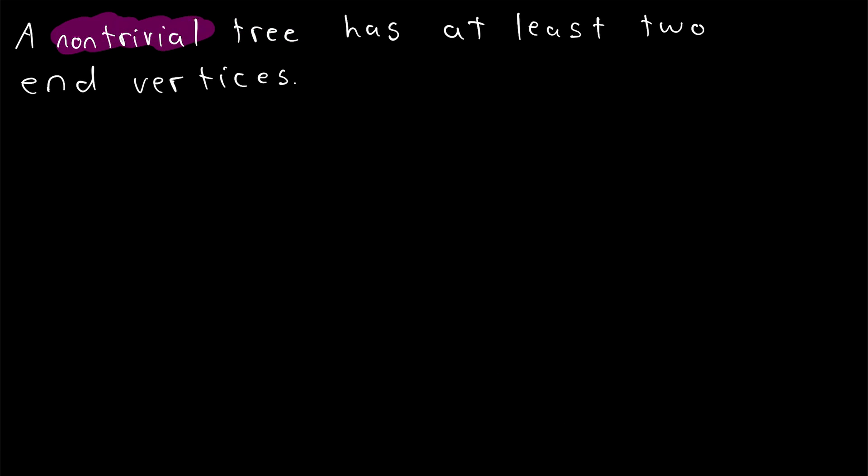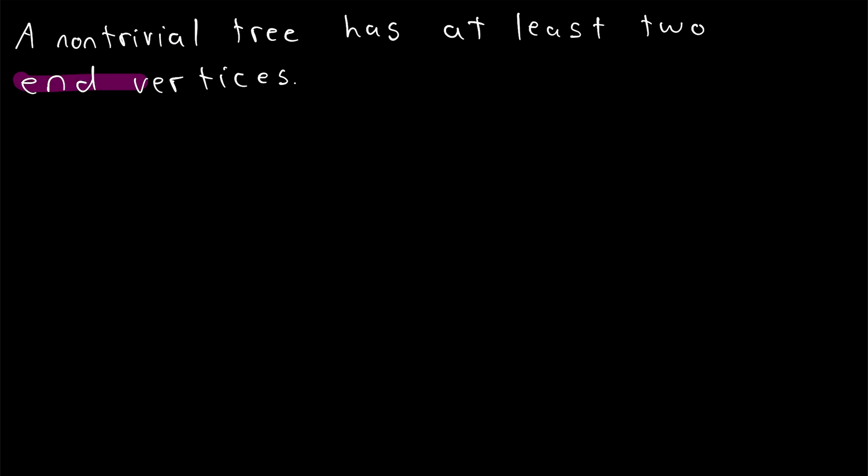Saying that it's non-trivial means it has more than one vertex, and end vertices are vertices with degrees equal to one, which are sometimes called leaves when we're talking about tree graphs.